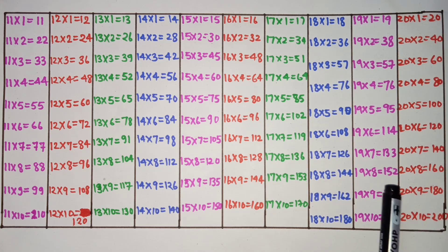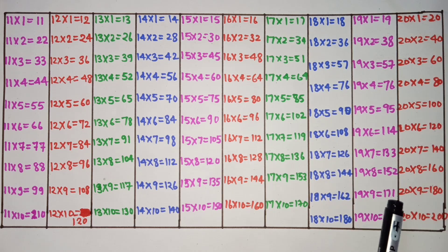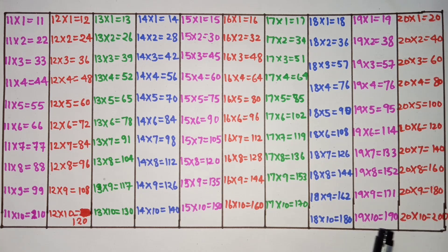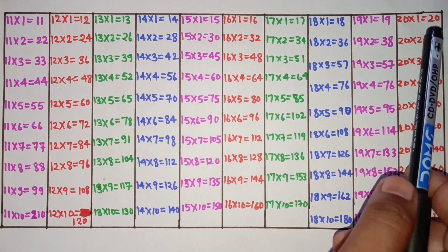19 sevens are 133, 19 eights are 152, 19 nines are 171, 19 tens are 190.